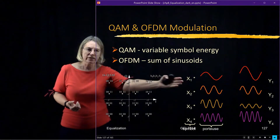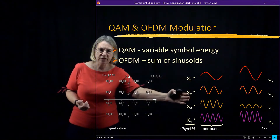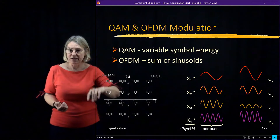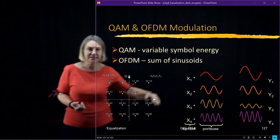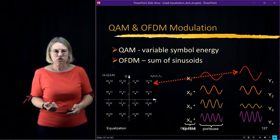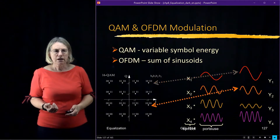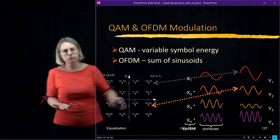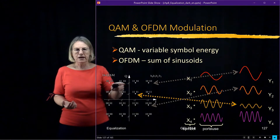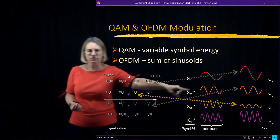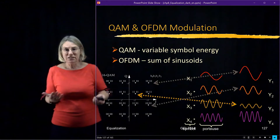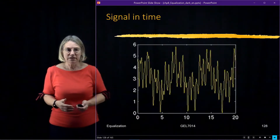This is showing the different data streams, and each one could have a different power depending on which one is added — and the summing of these sinusoids. If they happen to come from one of the outer points of the constellation, the amplitude will be larger; if they come from one of the inner points, the amplitude will be smaller. And I'm adding all of these as well.